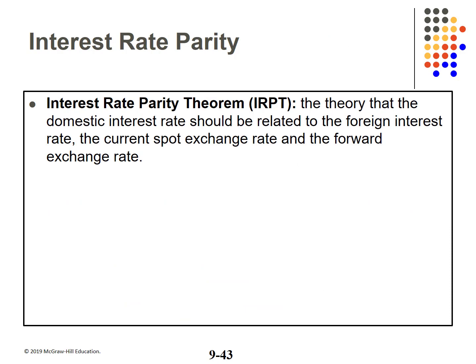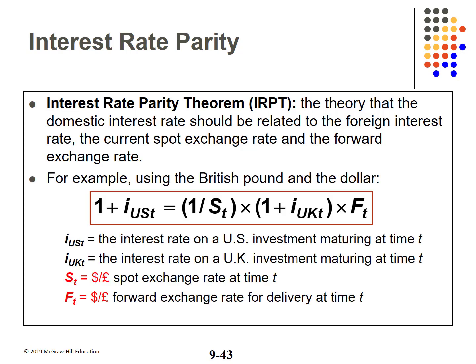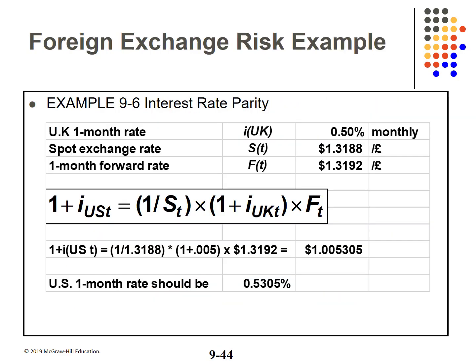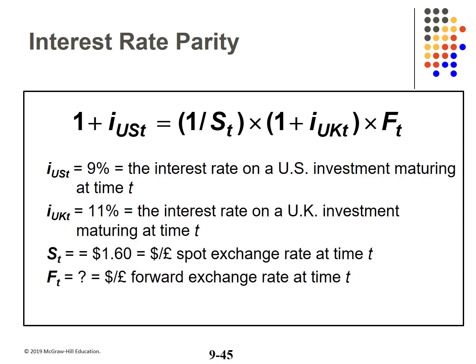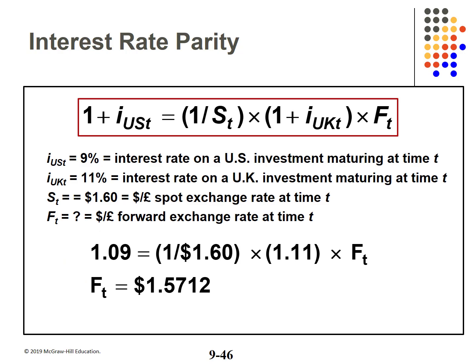Interest rate parity theorizes that the domestic interest rate should be related to the foreign interest rate, the current spot exchange rate, and the forward exchange rate. Example 9.6: on July 15, 2016, a US citizen has excess funds to invest in either US or British bank time deposits, with a one-month horizon and both options default risk-free. Using the interest rate parity formula with the given data, the US one-month rate should be 0.5305%. In a second use of the formula, given a US rate of 9%, UK rate of 11%, and a spot rate of $1.60 to the pound, the forward rate should be $1.5712.